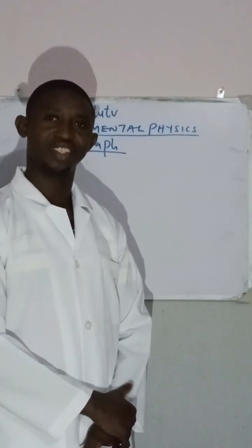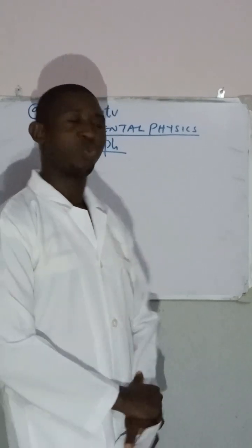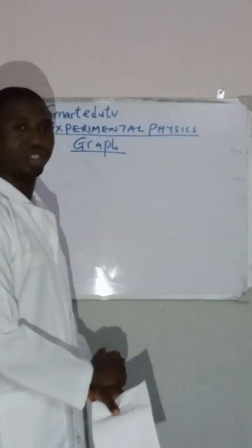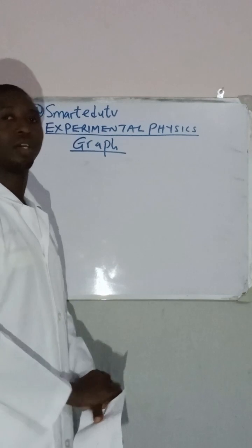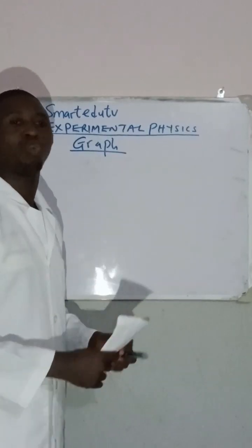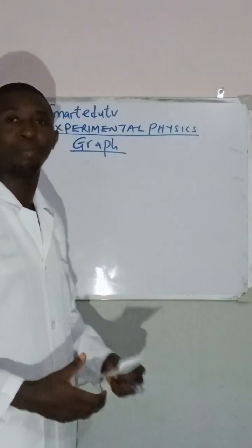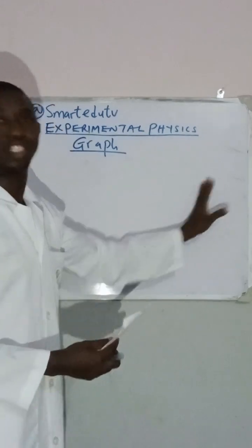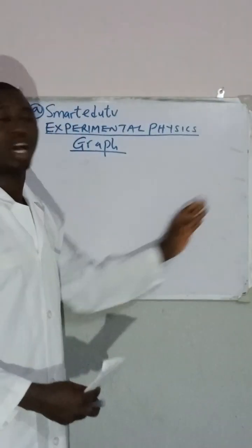Hello viewers, welcome back to my YouTube channel. Today we are going to be looking at experimental physics, and the topic of discussion is graph plotting. How do we plot a physics graph? For us to plot a physics graph, it means we must have performed experiments in the laboratory, taken our readings, and the next step is to plot the graph — to represent those readings on a graph.